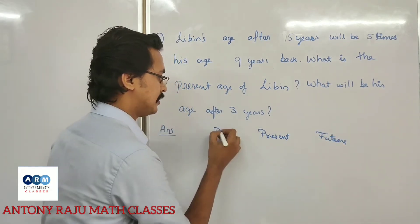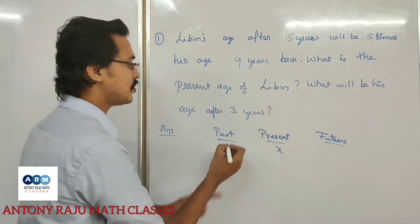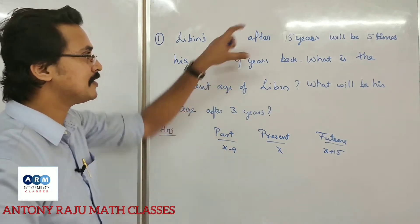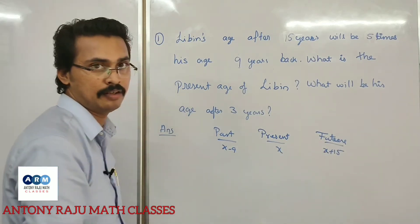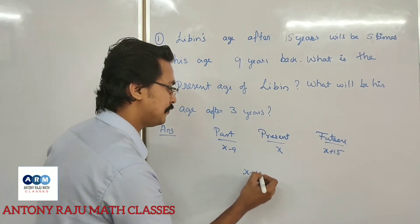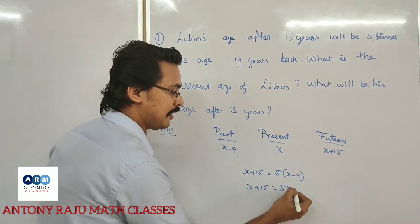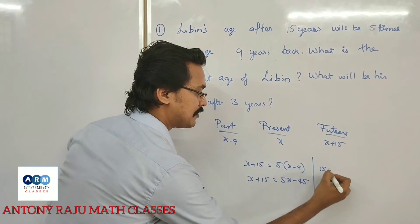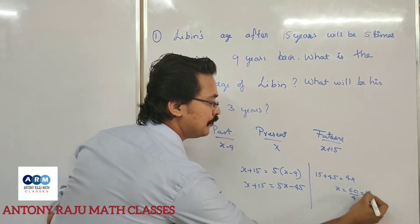We are going to set up the equation using present age. Future and past: x plus 15 is equal to 5 into x minus 9. So x plus 15 is equal to 5x minus 45. Then 15 plus 45 is equal to 4x. x equals 60 divided by 4, so x equals 15 years old.